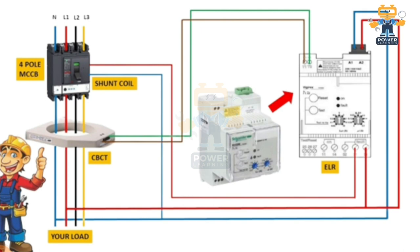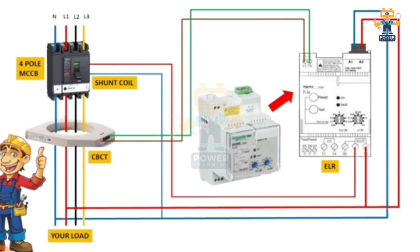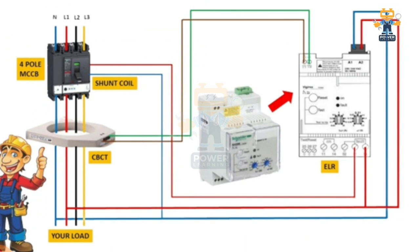To summarize: this is a simple wiring setup. The four-pole breaker has incoming supply and outgoing supply towards the load. On the load side we connect the CBCT, which has two wires connected to T1 and T2 of the earth leakage relay. A1 and A2 are the earth leakage relay power supply. The relay contact shown here operates the shunt coil to trip the breaker when leakage is detected.